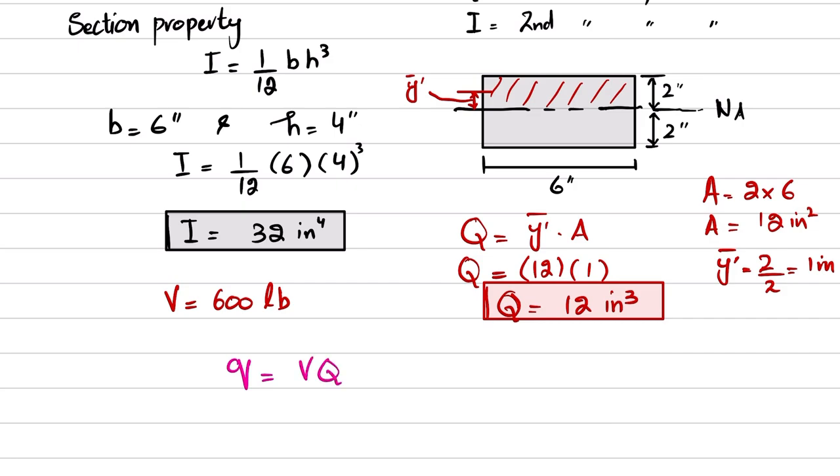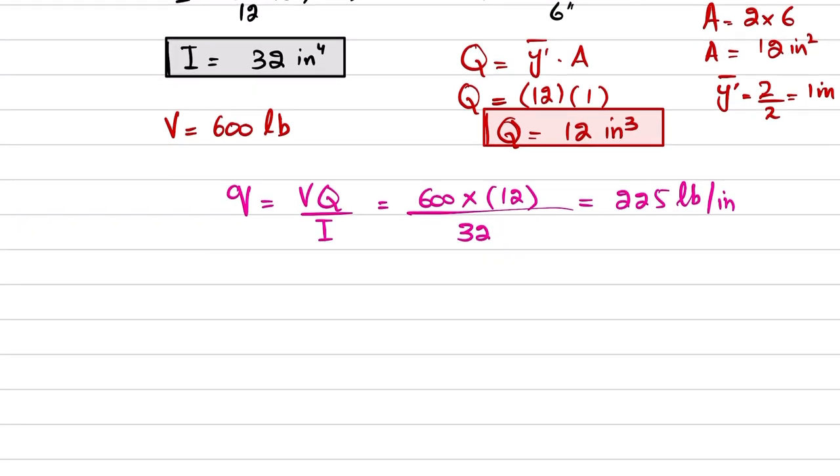Q equals V times Q divided by I. So V is 600 times Q is 12 divided by I is 32. When you solve this, you will get 225 pounds per inch.